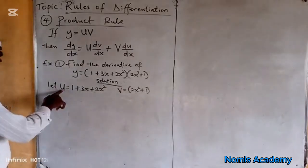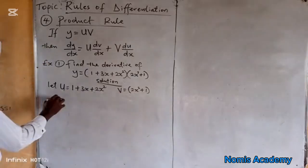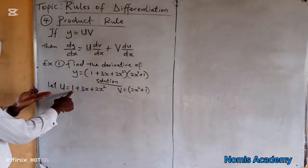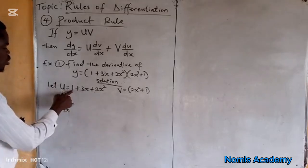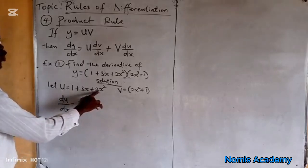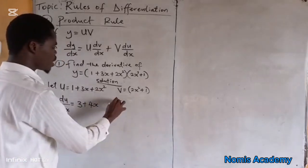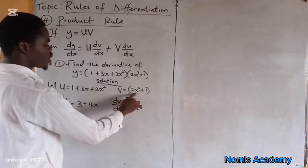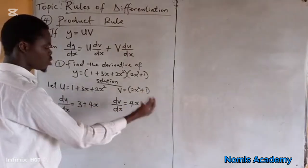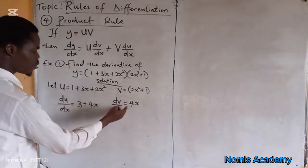Now we are going to differentiate u with respect to x and then differentiate v with respect to x. So du over dx equals: differentiate 1, you get 0 — when you differentiate a constant the result is 0. Differentiate 3x, you get 3. Differentiate 2x squared, you get 4x. So du over dx is 3 plus 4x. And dv over dx: differentiating 2x squared plus 1 gives 4x.